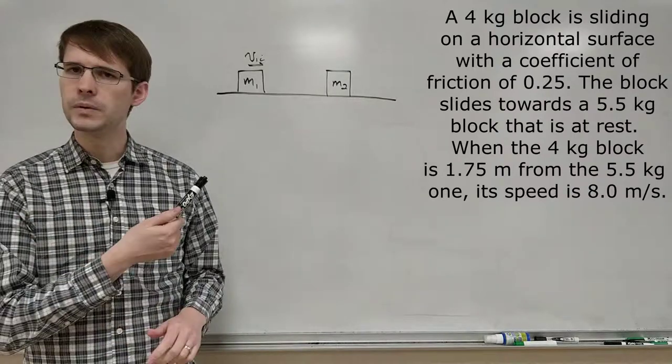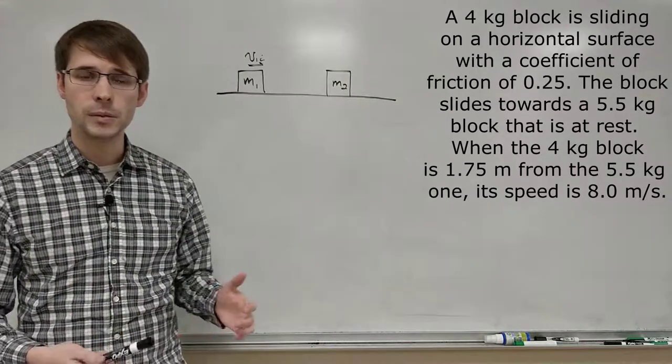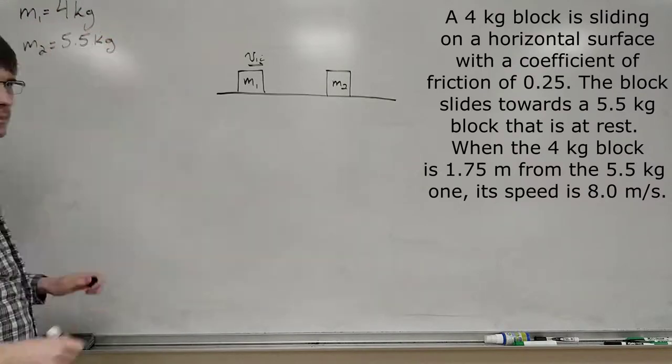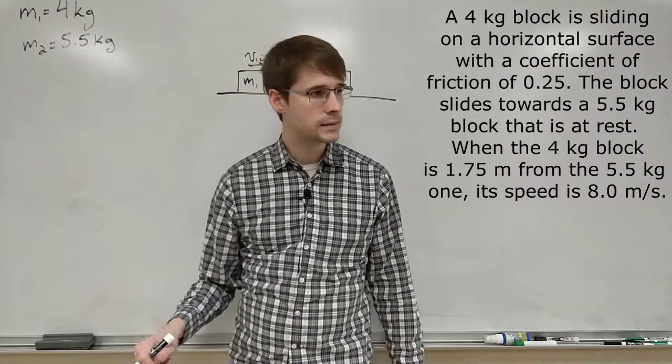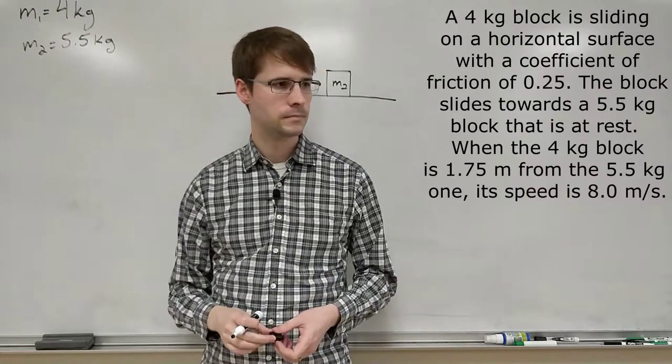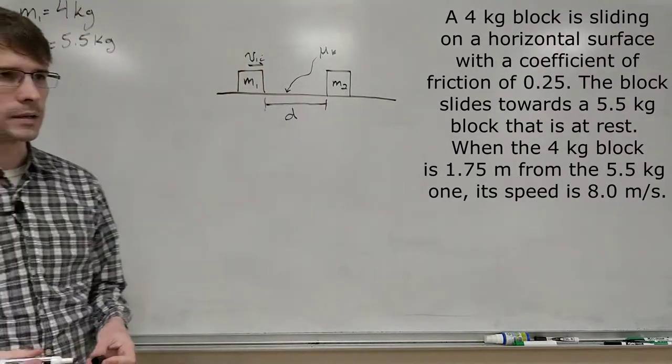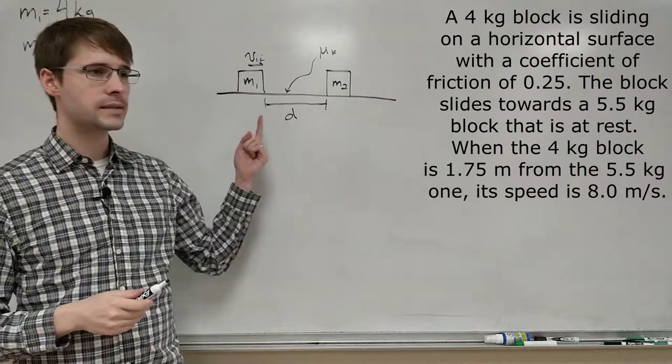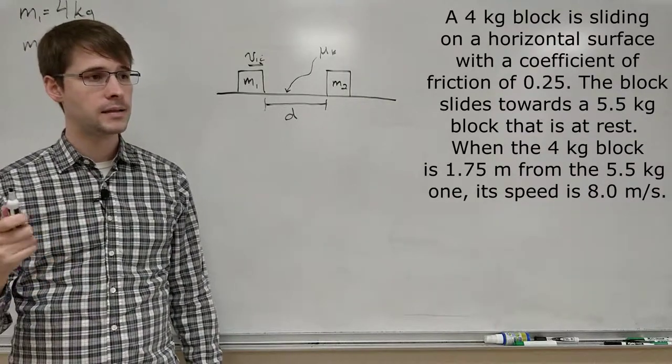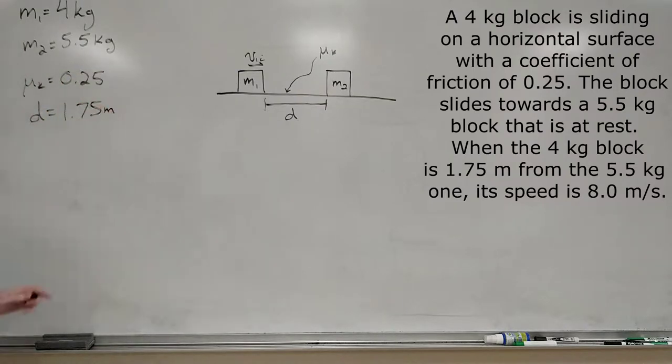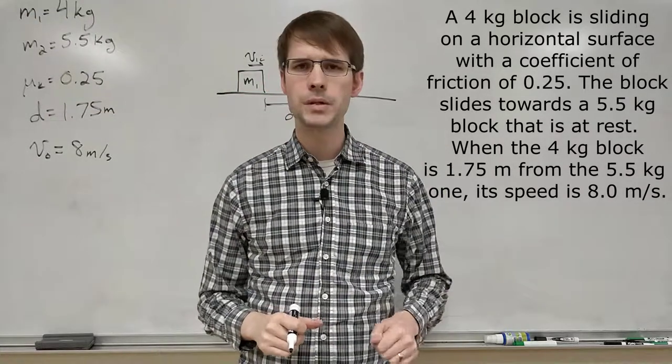So let's take a look. First thing is we've got some values up here. The masses - I'm going to start translating our written equation and writing down the notes. So we've got the two masses: M1 is 4 kilograms, that's our sliding block, and M2 is 5.5 kilograms. Alright. Moving on, we've got the coefficient of friction, mu_k, given to us as 0.25. And it tells us that the first block is 1.75 meters away at the beginning of the problem.